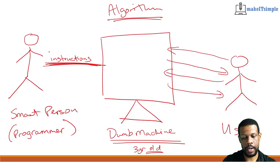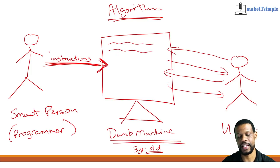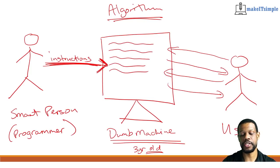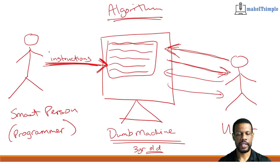The programmer sends these instructions to the dumb machine. The list of instructions has to be very clear — a line to say do this, then a line to say do that, then the next line and the next line. The dumb machine will translate these lines into something that allows the user to get the information. Think of it this way: imagine you are telling a child how to serve people at a restaurant.